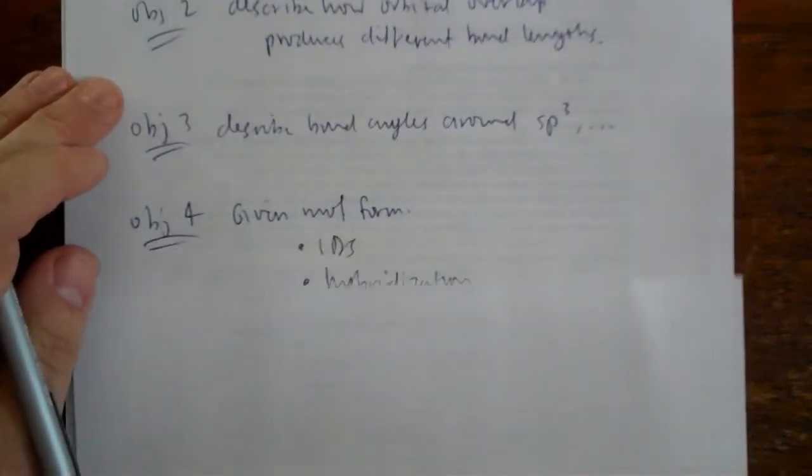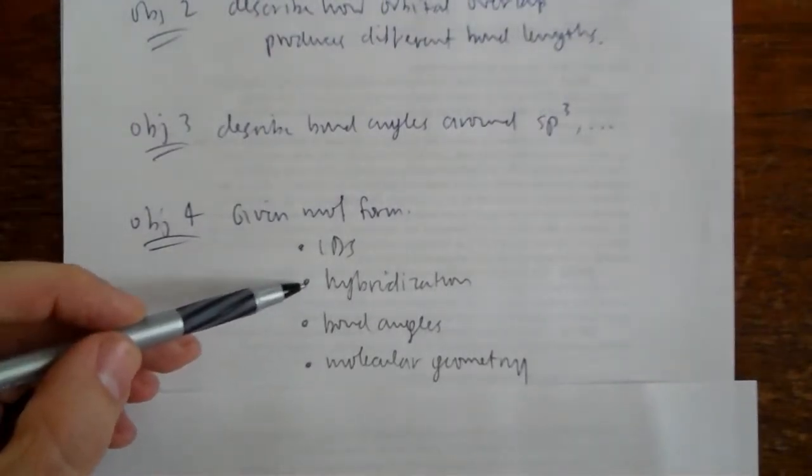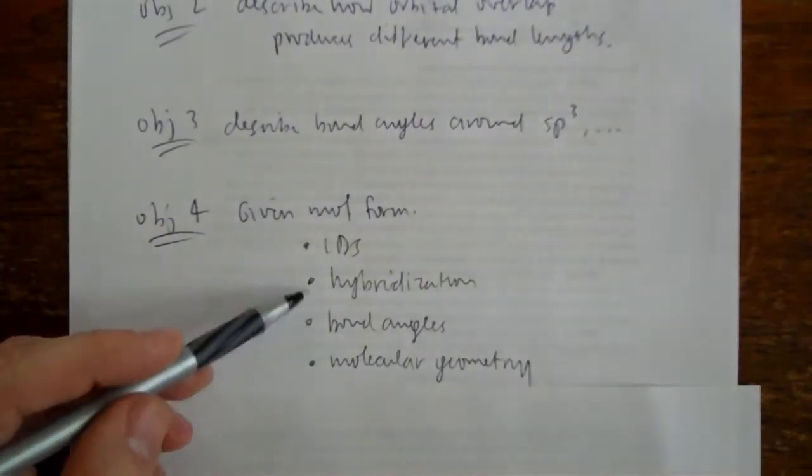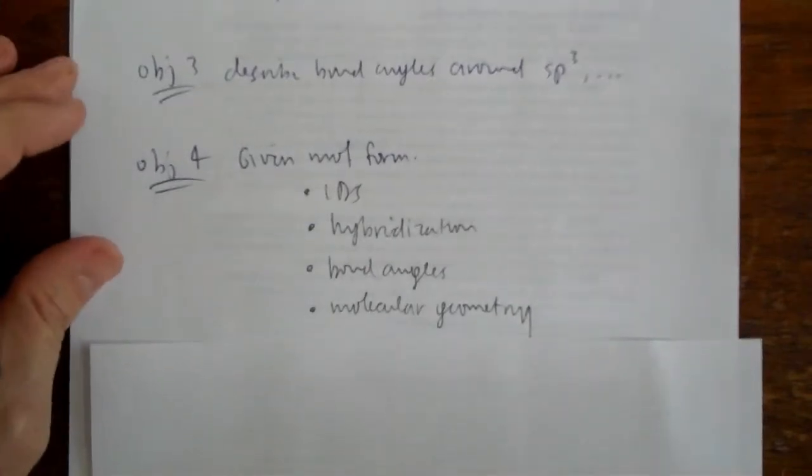Objective 4 is given a molecular formula, predict these four things: Lewis dot structure or the calculated structure, hybridization of all atoms, bond angles about particular atoms, and molecular geometry about a particular atom.